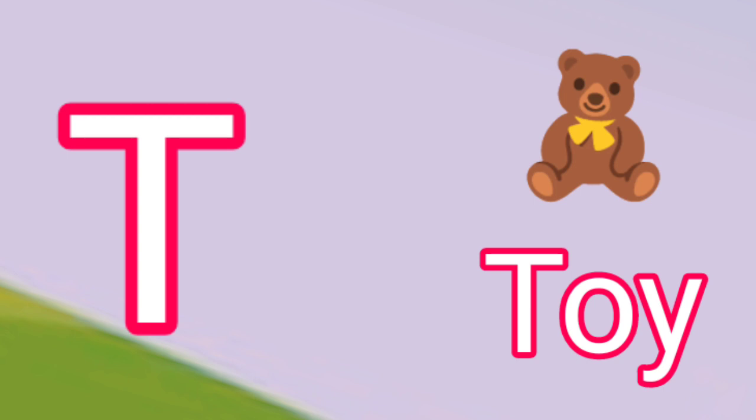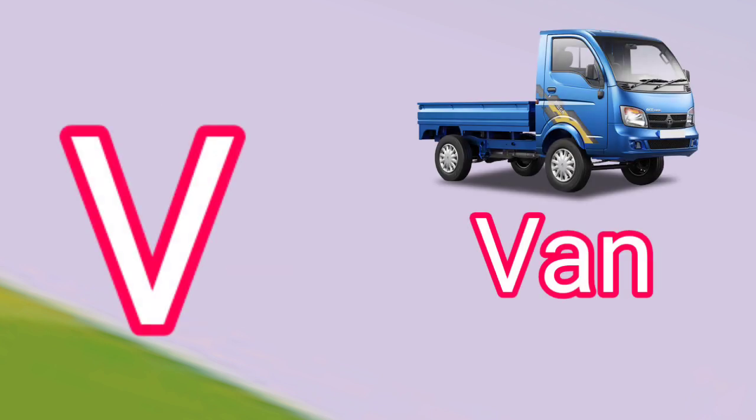D is for toy. U is for umbrella. E is for man. W is for whale.